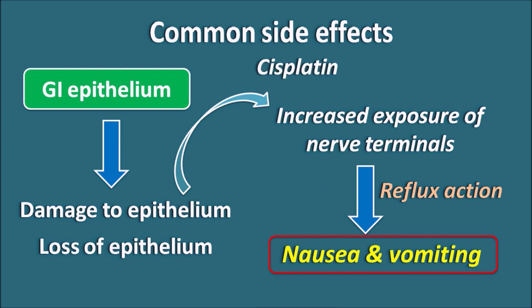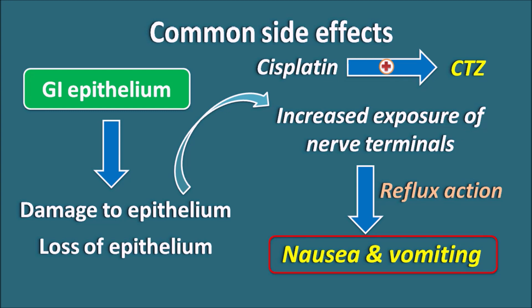A few anti-cancer agents like cisplatin are so toxic they can directly stimulate the CTZ — chemoreceptor trigger zone — thereby also producing nausea and vomiting. Fortunately, we have drugs like 5-HT3 antagonists such as ondansetron, granisetron, and tropisetron, which can inhibit the CTZ and thereby control nausea and vomiting during anti-cancer chemotherapy.